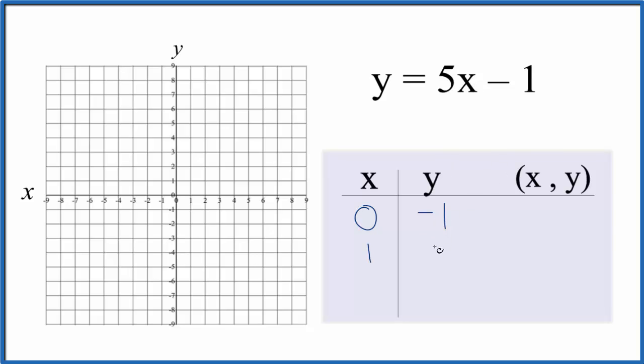5 minus 1 is 4. So we have that point. How about we choose negative 1? 5 times negative 1, that's negative 5, and then we have a negative 1 that gives us a negative 6.